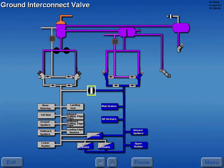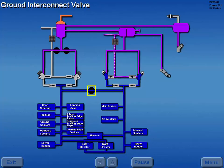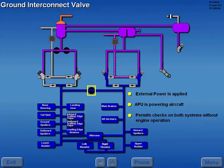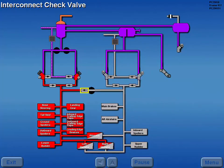The ground interconnect valve allows System B hydraulic pressure to power System A if an external source or the APU is supplying aircraft power. This permits maintenance and pre-flight checks of both systems without engine operation. A check valve on the System A side of the ground interconnect valve prevents System A from pressurizing System B if the ground interconnect is open with System A pressurized.